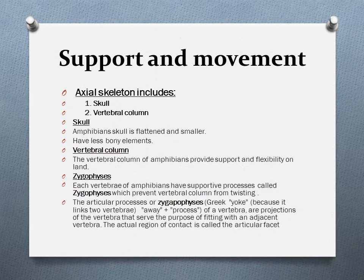Now we will discuss about support and movement in amphibians. We will discuss about the axial skeleton and appendicular skeleton of amphibians that provide support and protection. The axial skeleton is the part of the skeleton that consists of the bones of the head and trunk of a vertebrate, including the skull and the vertebral column.